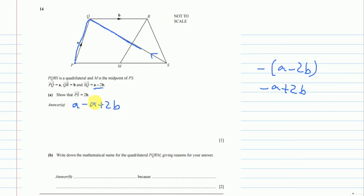And A and A, this is a positive A and this is a negative A, they will be cancelled. So what we are left with is 2B. Now part B.